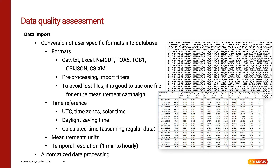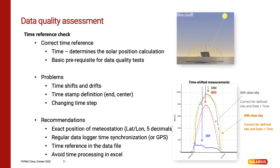From our side we prefer minute or sub-hourly temporal resolution, and time reference is important for further processing. Next, we need to do a time reference check. Solar irradiation is dependent on the position of the Sun, so we need to know the exact time for further data quality tests. Issues include time shifts and drift, unclear timestamp definition or changing timestep. To avoid these problems, exact site coordinates are needed with at least five decimal points. It is recommended to perform regular data logger time synchronization or use a GPS receiver to make sure you have correct data logger timestamps. It is good practice to record timestamps together with measured data, and it is important to avoid time processing in tools such as Excel. Also, combining measurements from several metastations with different time references is not a good practice.